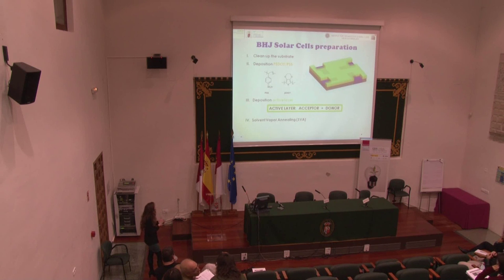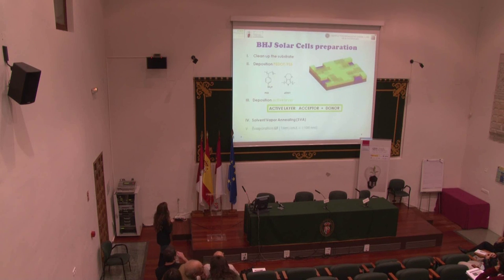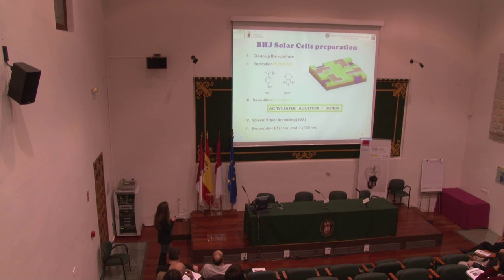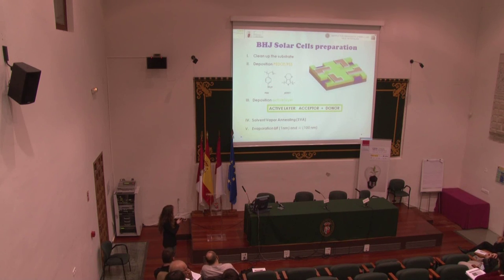Then we carry out the solvent vapor annealing process, which I will explain on the next slide. And finally, we evaporate lithium fluoride and aluminum as electrodes. We normally deposit one nanometer of lithium fluoride to improve the aluminum interface, and one hundred nanometers of the aluminum electrode.